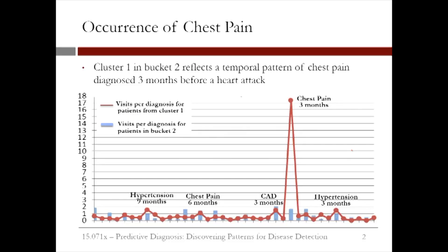The first pattern shows the occurrence of chest pain three months before the heart attack. The red dots depict the visits per diagnosis for patients in cluster 1 within bucket 2, and the blue dots depict the visits per diagnosis for patients in bucket 2 throughout. Note the very significant increase for visits related to chest pains three months before the event — about 17 visits for the red patients and about 1.5 visits for the blue patients.